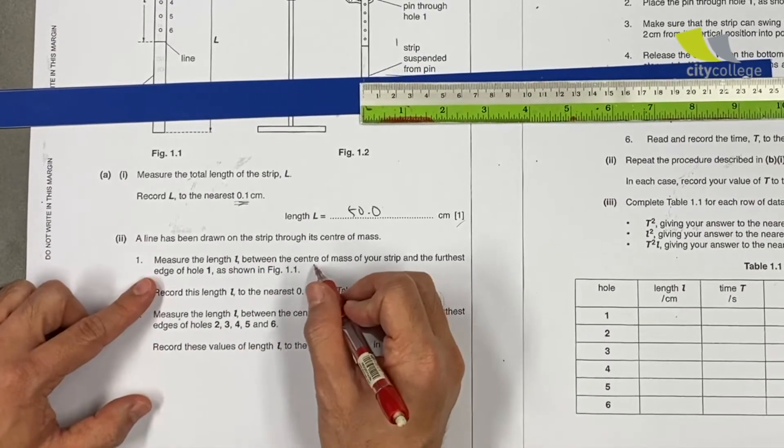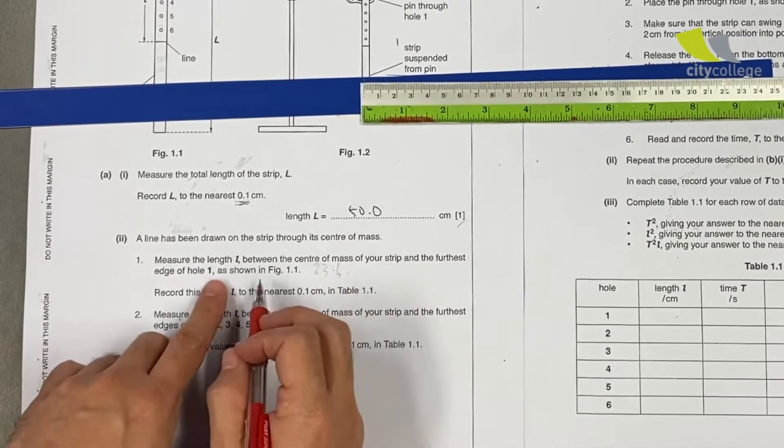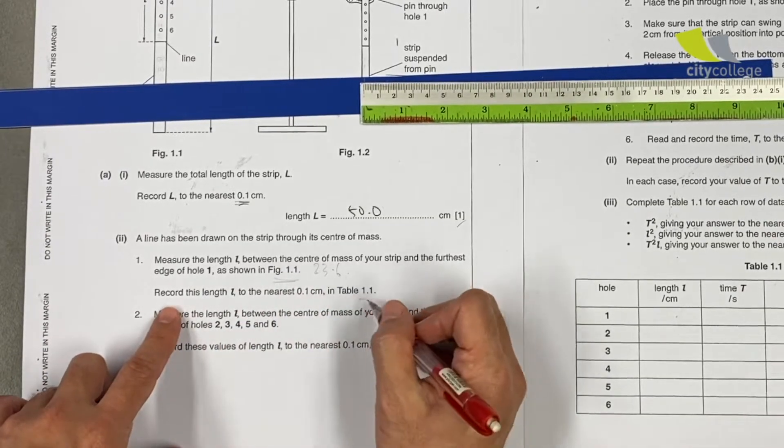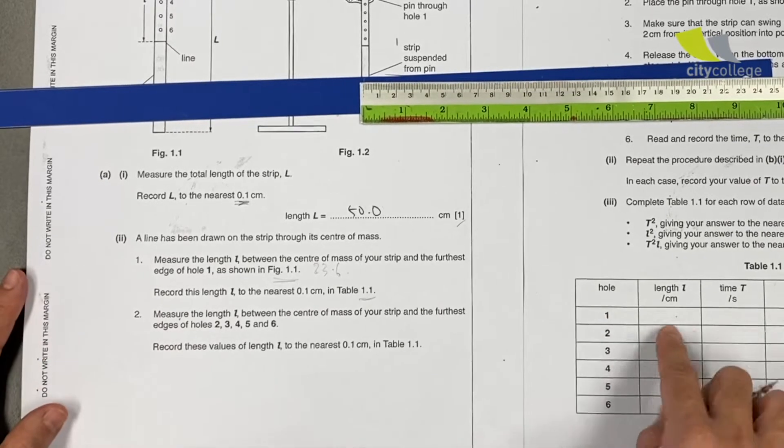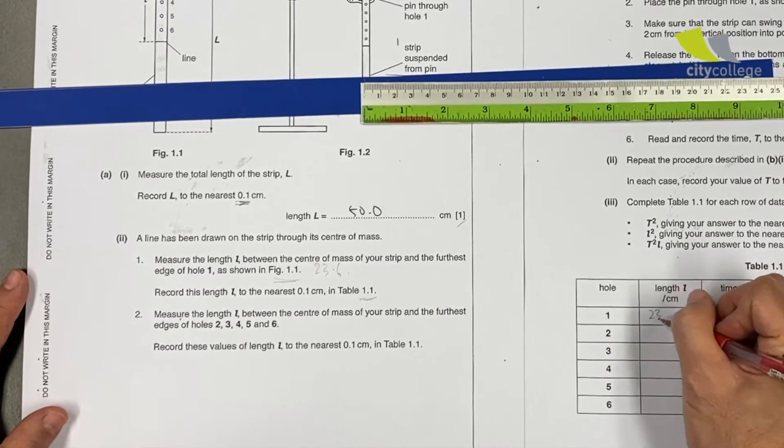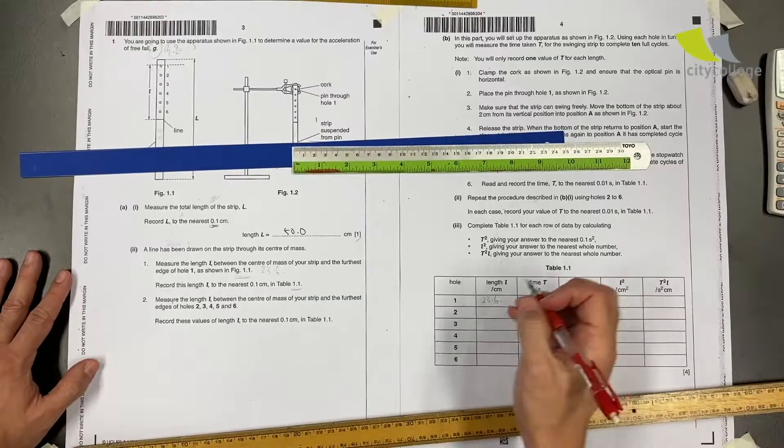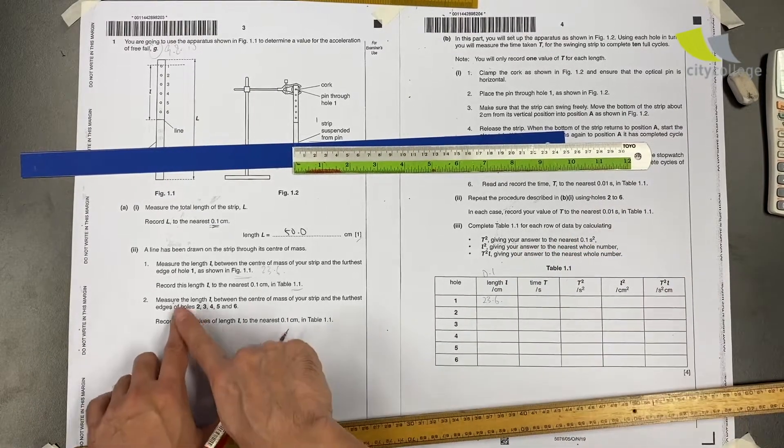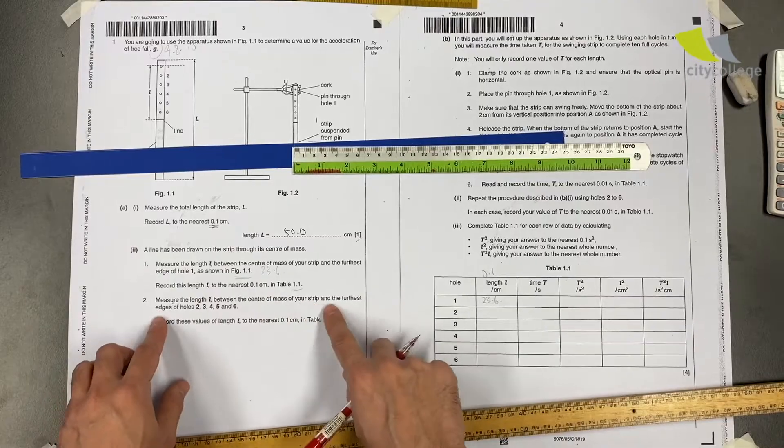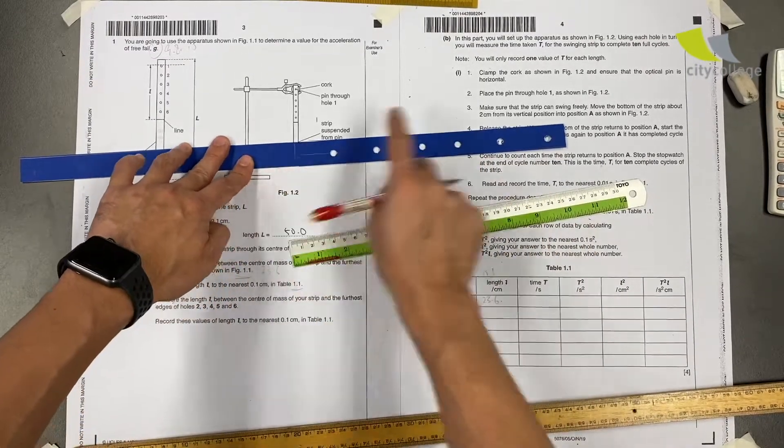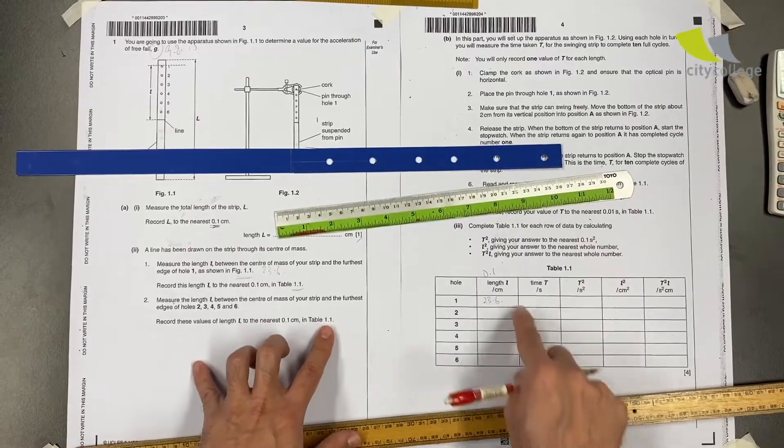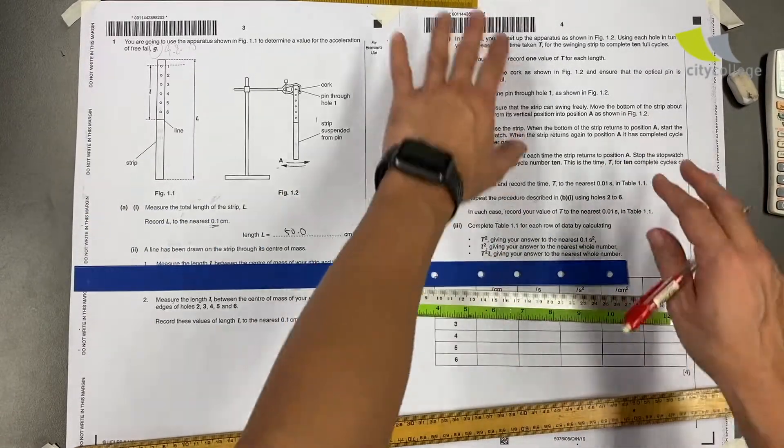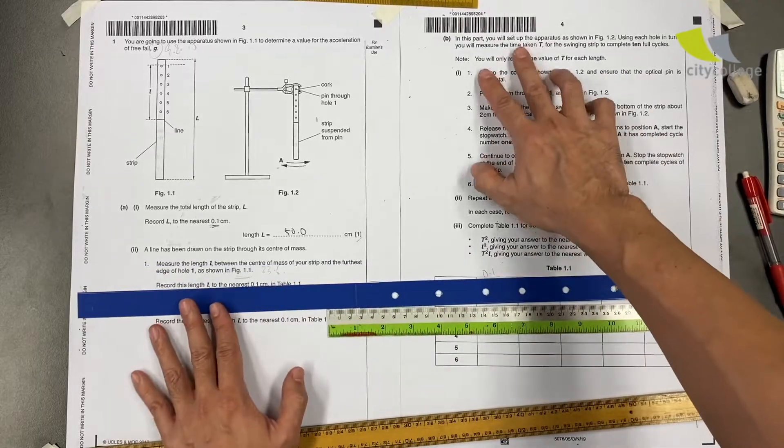23.6. Write it in figure 1.1, table 1.1 over here. I think hole 1 is this, so this is 23.6. They want it to 0.1, so it's always good to write down over here. Measure the length between the center of mass of the strip and the furthest edge of hole, so they want me to repeat for the rest of the holes. I will get this done later. Next, let's understand the experiment first so we have an overview.